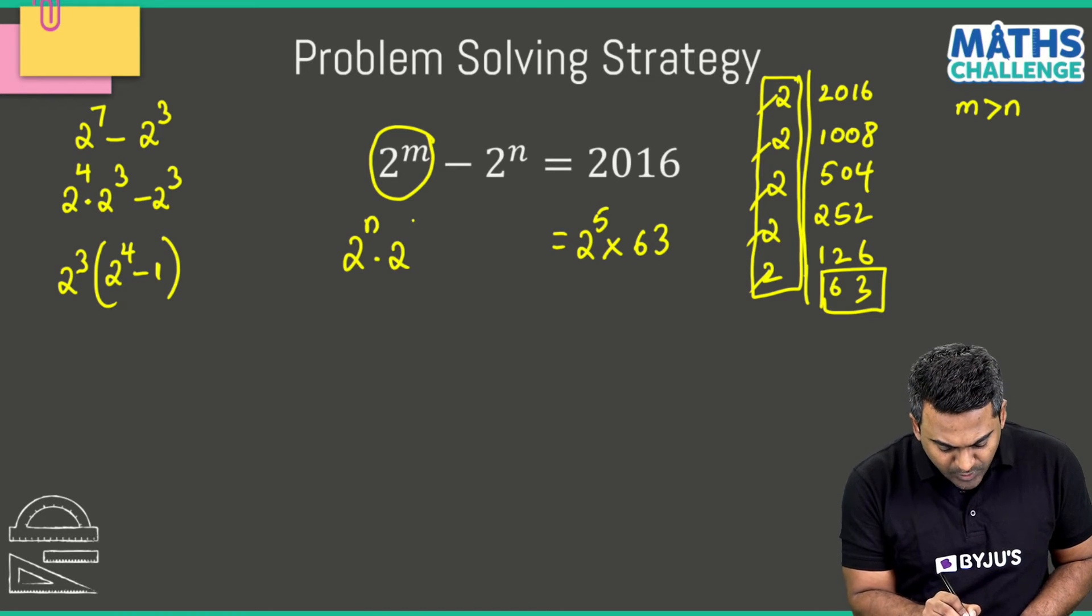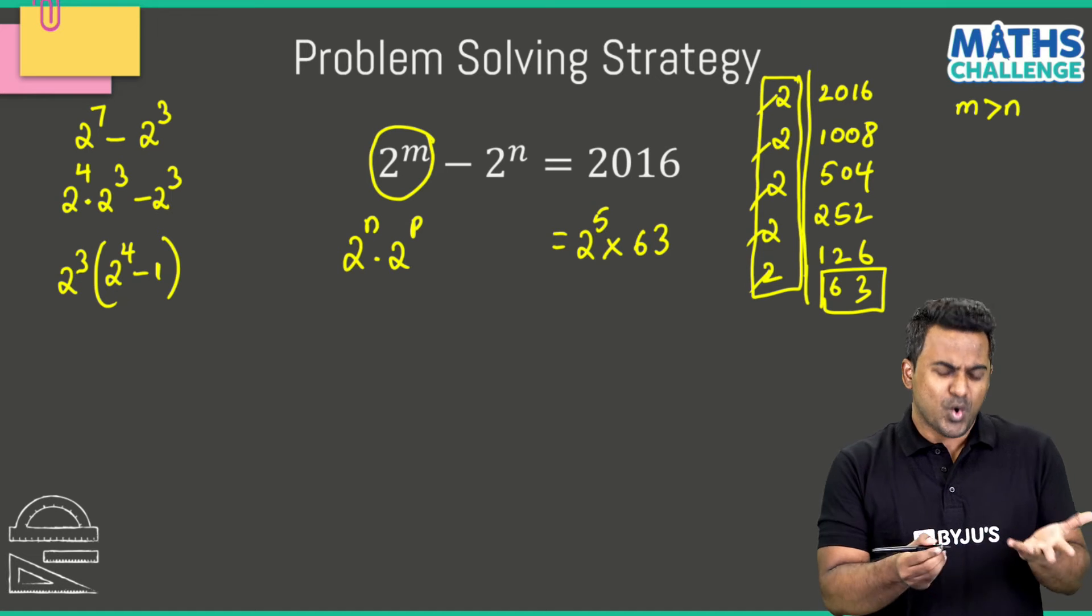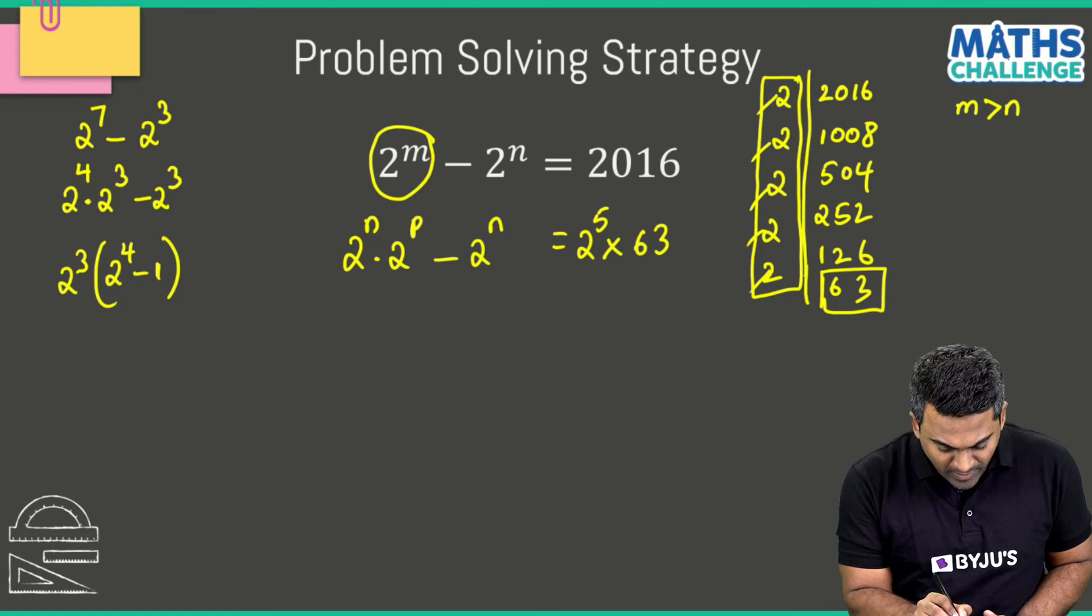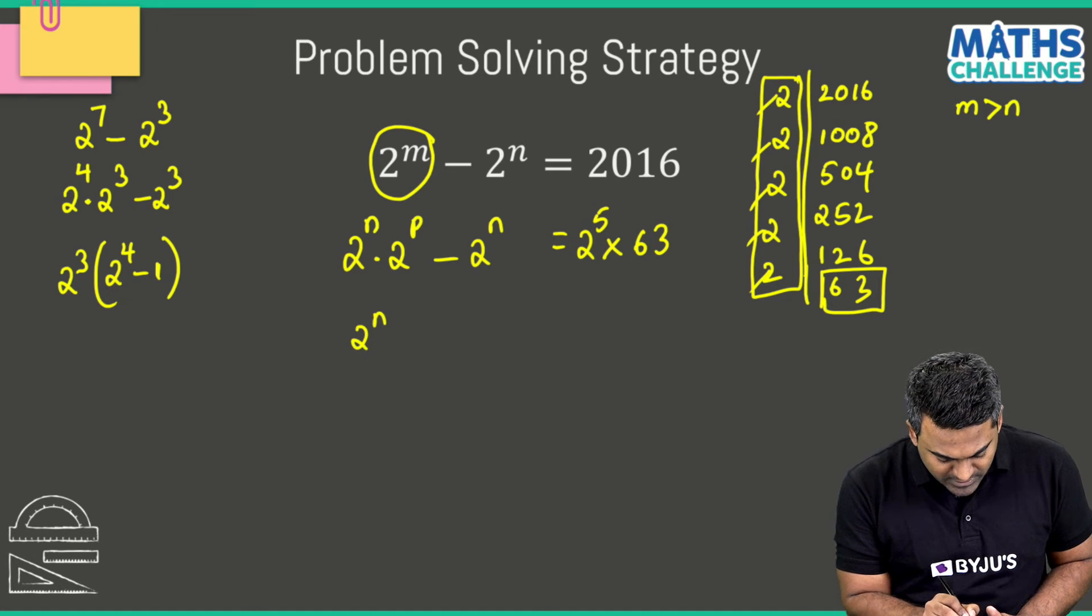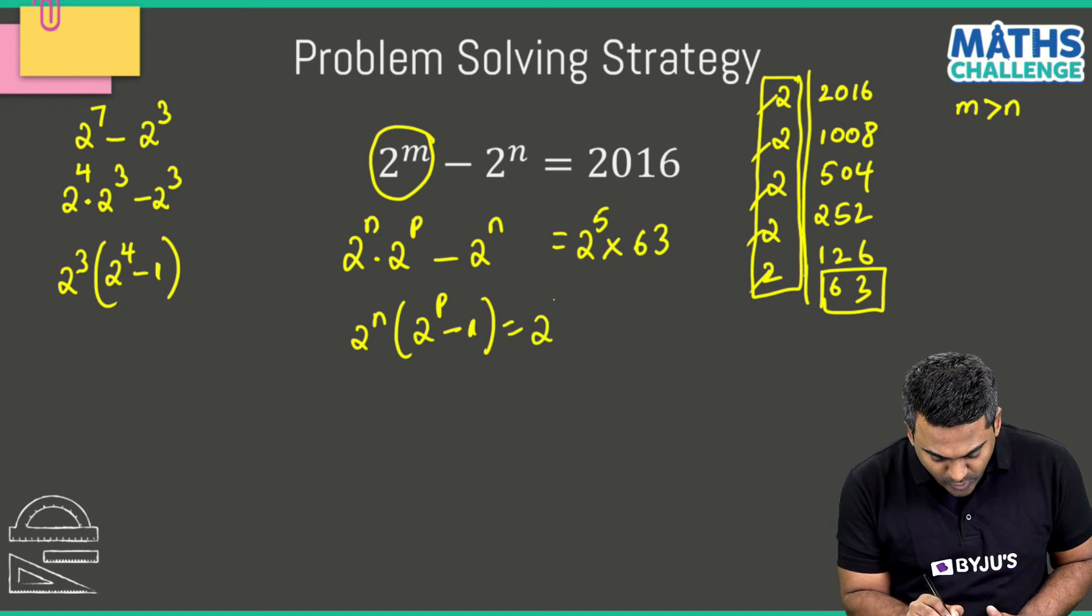M, 2 power m, I'll be able to write it like 2 to the power n multiplied with 2 power something p, right? I don't know that, it's fine at this point in time, minus 2 power n. Now both these terms have 2 to the power n common. I'll take that out and then this becomes 2 power n multiplied with 2 power p minus 1.